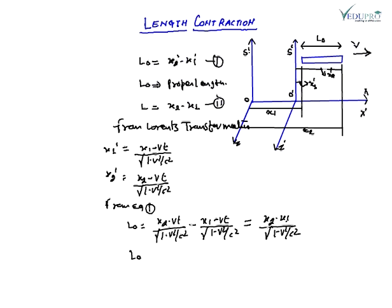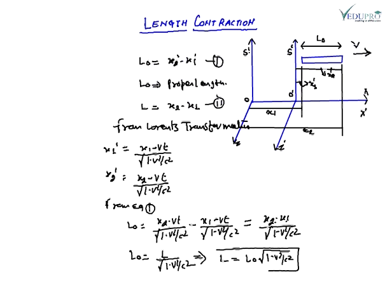From equation two, X₂ - X₁ = L, so we get L naught = L / √(1 - V²/C²), which gives us L = L naught × √(1 - V²/C²). Here, L is always less than L naught — the apparent length is always smaller than the proper length. The length appears to be contracted by the factor √(1 - V²/C²). This is also known as Lorentz contraction or Lorentz-FitzGerald contraction.